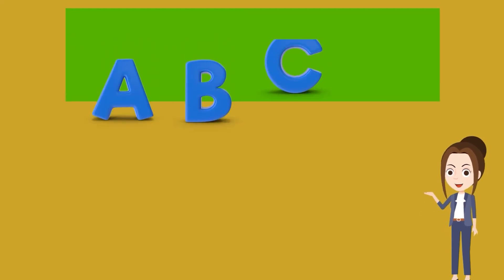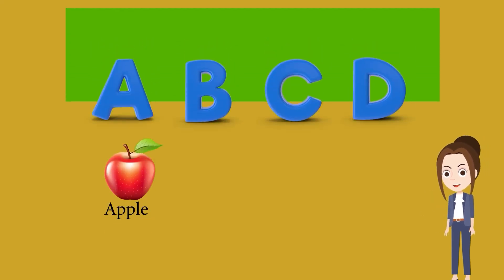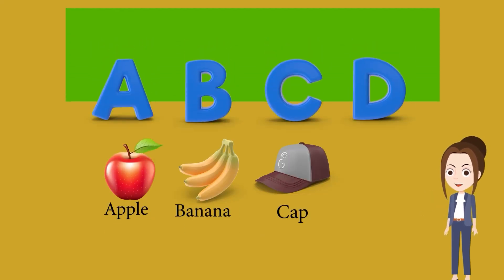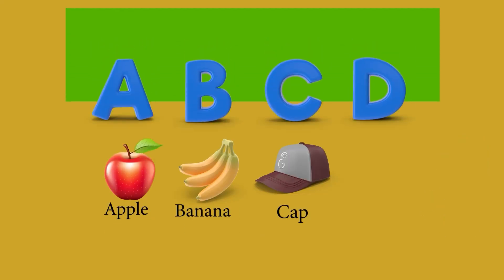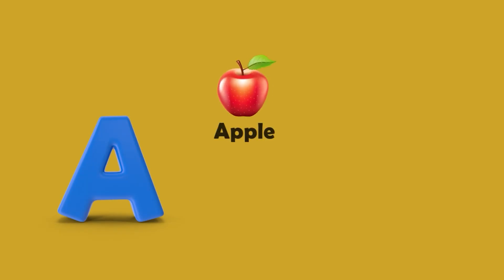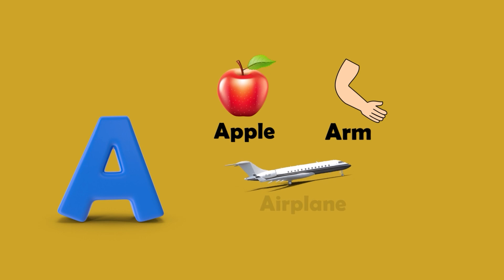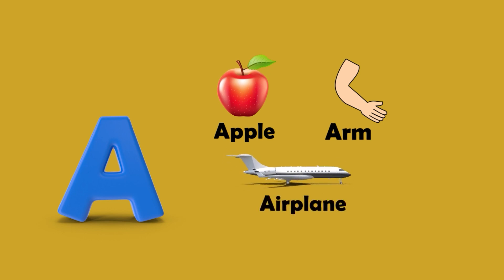Hey kids! Let's learn the alphabets. A — A is for Apple. A is for Arm. A is for Airplane.